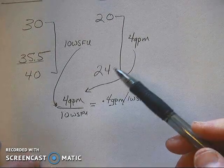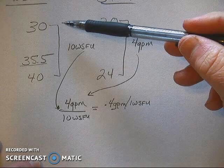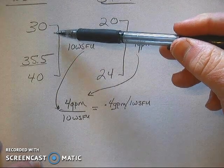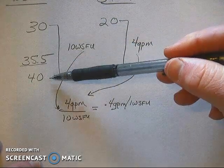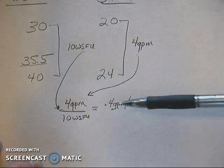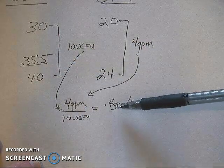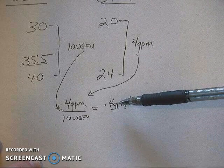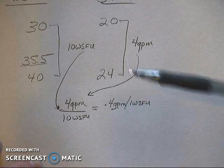So for every WSFU that I go up after 30 or come down from 40, the gallons per minute will be 0.4 gallons per minute for every WSFU.